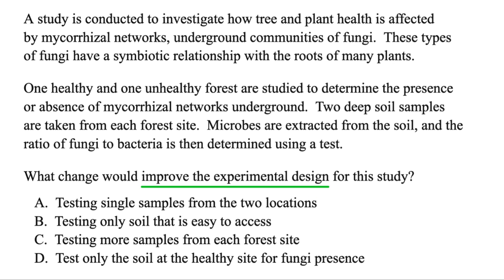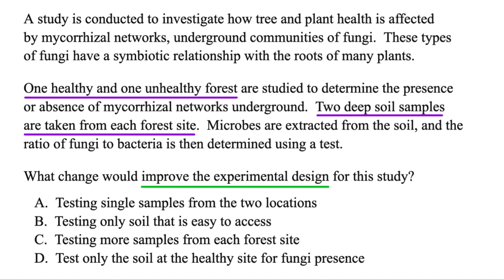Here we're finding what would improve the experimental design for this study. Here's the setup: one healthy and one unhealthy forest are studied to determine the presence or absence of mycorrhizal networks underground. Two deep soil samples are taken from each forest site. Microbes are extracted from the soil, and the ratio of fungi to bacteria is determined using a test. So again, what would improve the design? A lot of questions are going to ask about sample size, but notice we're only taking two deep soil samples, and that's not that much.